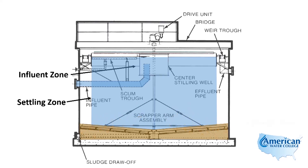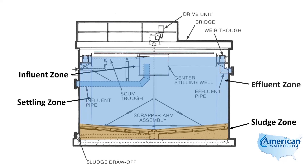The outer edges make up the effluent zone. On a circular clarifier, the effluent weir goes around the entire circumference of the clarifier, and that is the effluent zone.